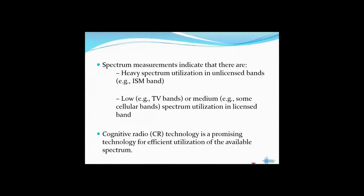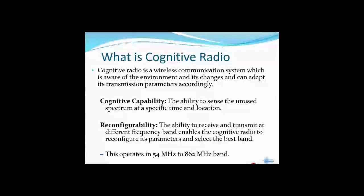The cognitive radio (CR) technology is a promising technology for efficient utilization of the available spectrum. Cognitive radio is a wireless communication system which is aware of the environment and its changes and can adapt its transmission parameters accordingly. This communication system has cognitive capability — it can sense the unused spectrum at a specified time and location — and also the property of reconfigurability, meaning it can receive and transmit at different frequency bands by reconfiguring its parameters.